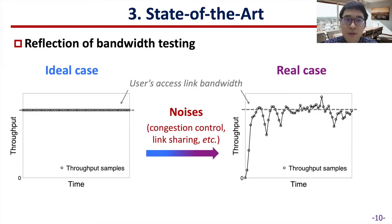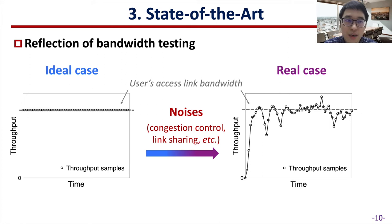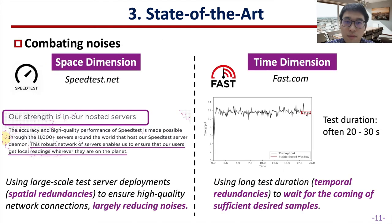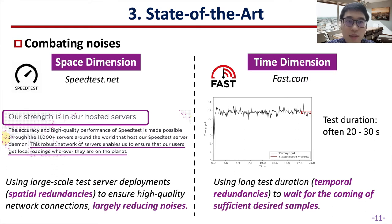In fact, the result of an ideal bandwidth testing process should obey the graph on the left. However, due to noises generated from congestion control and link sharing, the actual bandwidth testing graphs usually look like the one on the right. In order to get rid of the impact of noises, today's BTSs usually combat noises from space and time dimensions.